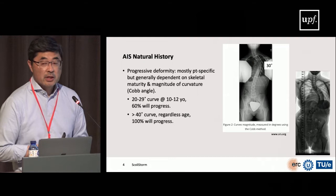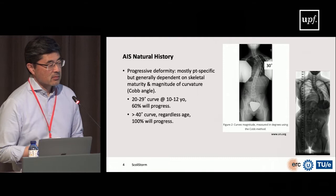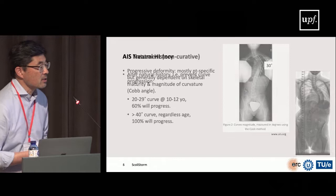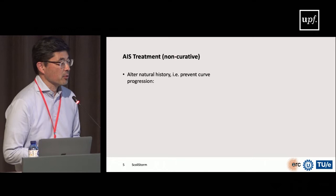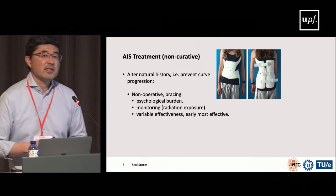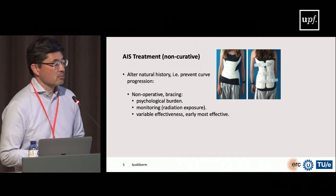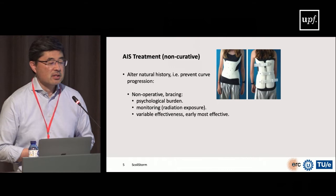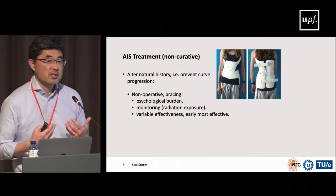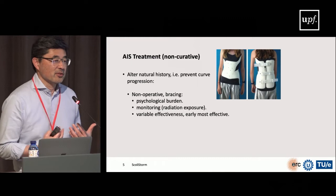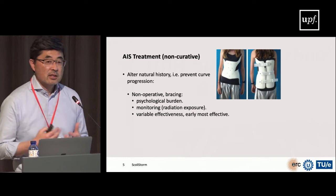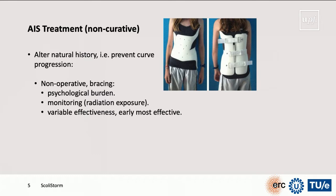Because of this progressive natural history, the treatment for AIS — not a cure, but a way to stop progression — is the primary goal. The less curvature, the better off for the patient. Today's treatments are basically the same as in Hippocrates' time. Non-operative treatment includes bracing. A typical example is the Boston brace, which must be worn either eight hours during the day or eight hours while sleeping. You can imagine the huge psychological burden — it makes the patient stand out from peers, especially in summer when it may be visible outside clothing.